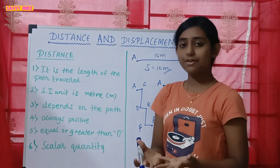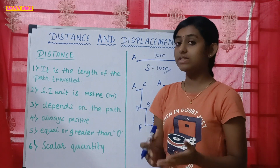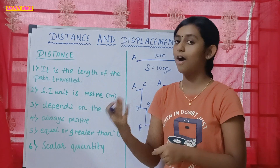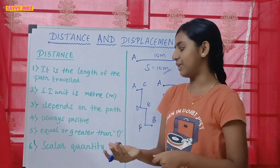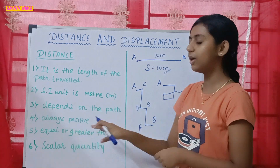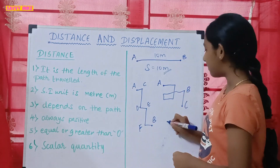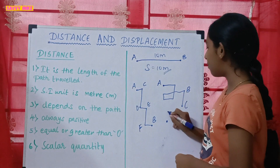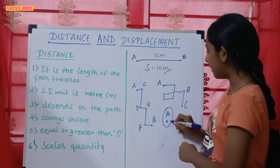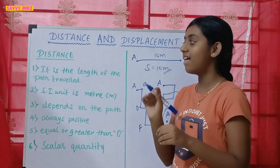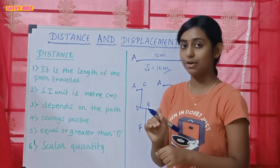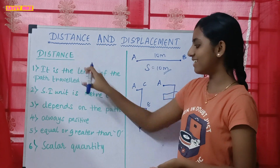Distance is always greater than or equal to zero. It is greater than zero because it's always positive. Distance equals zero only when a body is not moving — when it is at the same place and has no motion.